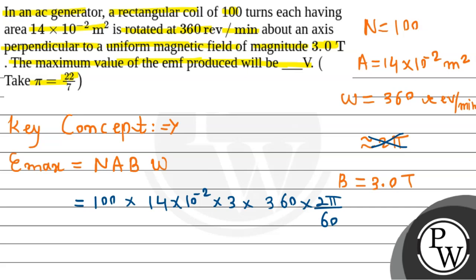Let's simplify this further. 100 times 14 into 10 to the power minus 2 times 3 times (360 times 2π divided by 60). The zeros cancel, 360 divided by 60 becomes 6, then 18. So it becomes 14 into 18 into 2 times (22 by 7). 14 divided by 7 is 2, 2 times 2 is 4, 4 times 18 equals approximately 15.84 volts.